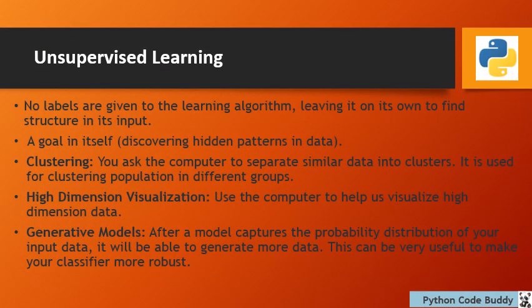Now we touch on unsupervised learning. In unsupervised learning, no labels are given to the learning algorithm, leaving it to find structure in its input on its own. The goal is to discover hidden patterns in the data. Examples include clustering — where the computer separates similar data into groups used for clustering populations — high-dimension visualization, and generative models, where after a model captures the probability distribution of input data, it can generate more data.